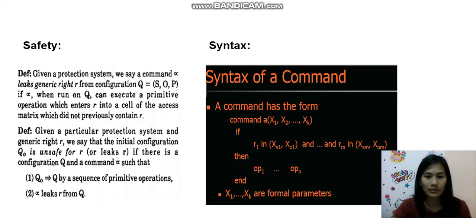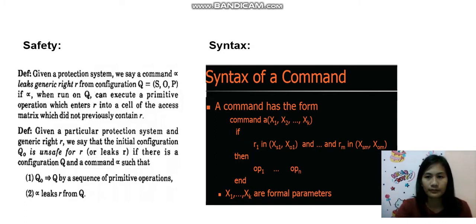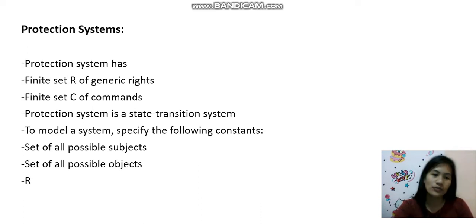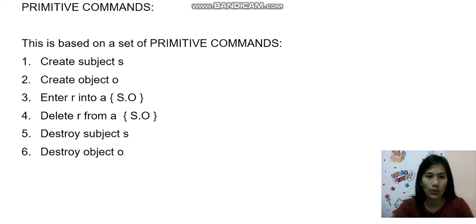We have here safety and the syntax. This is the syntax used when you want to put data or create entries, and you have to ensure the safety of your system — how you have to protect your system. The protection system has a set of generic rights R and a set of commands C. It is a state transition system specified by the following constraints: the state of all possible subjects, the state of all possible objects, and the access rights R. Here we have primitive commands — the five commands: create object, create subject, enter, delete, destroy subject, and destroy object.